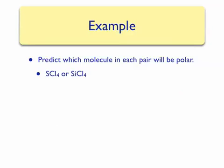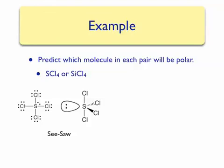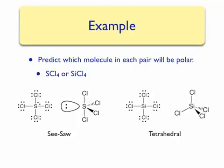Our next example is predicting whether sulfur tetrachloride or silicon tetrachloride is polar. We first need Lewis structures for both molecules. For sulfur tetrachloride, note that around the sulfur atom there are four sigma bonds and one lone pair. This corresponds to a seesaw geometry. For silicon tetrachloride, there are four sigma bonds around the silicon atom, giving us a tetrahedral geometry.